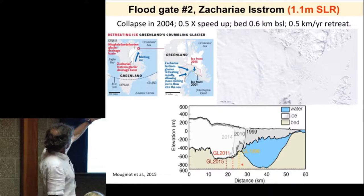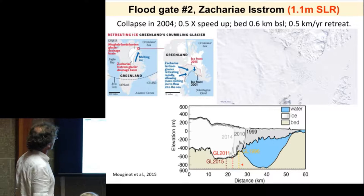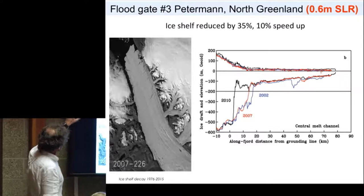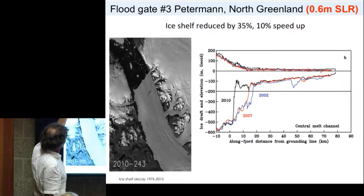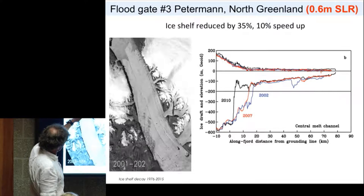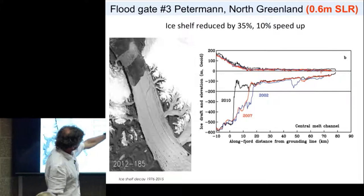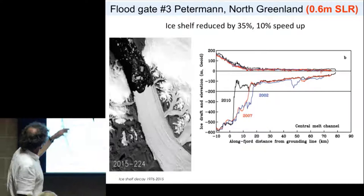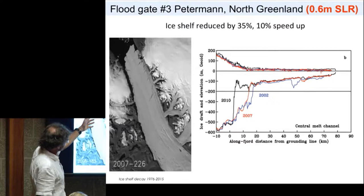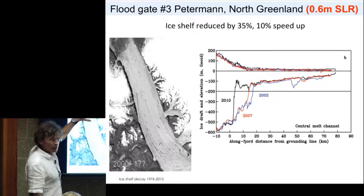Petermann Glacier — the third one — had a very stable ice front. Since first visited by human eye in 1910, the ice front was about the same position and stayed that way for a long time until 2010, when a big piece of ice started to break off. NASA airborne measurements show the thickness in 2002, 2007, and 2010 — 400 meters of ice, gone. This is the floating part of the glacier in contact with the ocean, starting to break up as the ocean waters around Greenland get warmer. That glacier hasn't changed its speed much yet, but it's lost 35 percent of its floating extension.